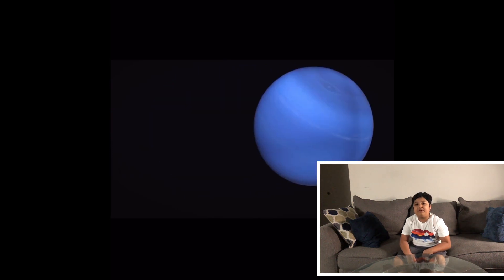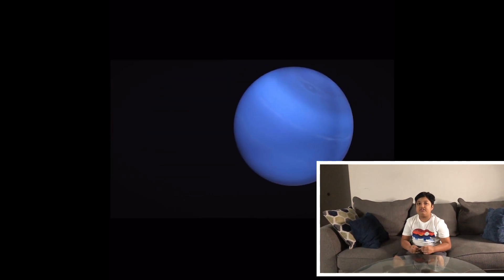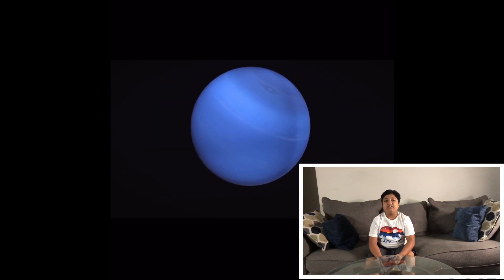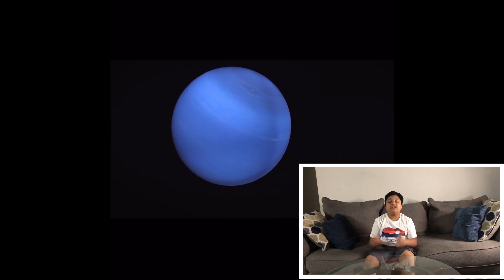The eighth planet from the Sun is Neptune. Neptune is an ice giant and a gas giant.